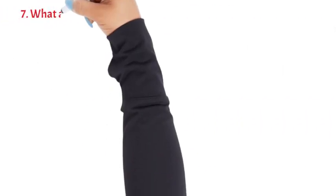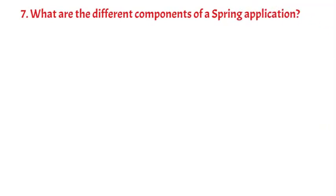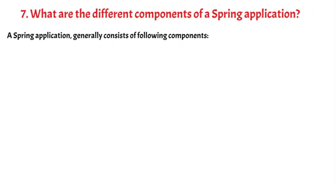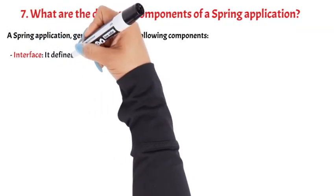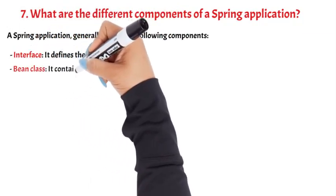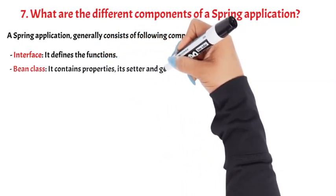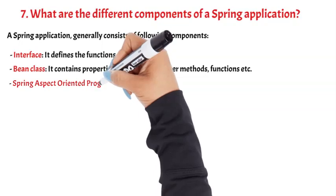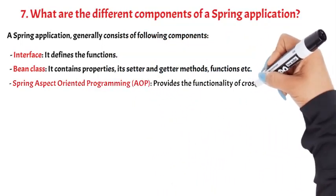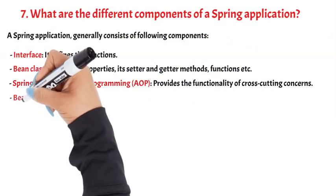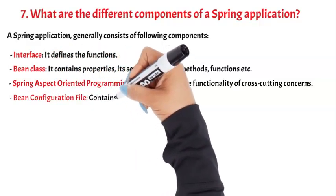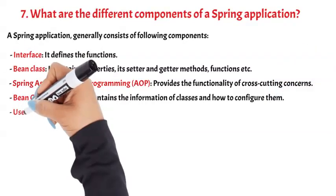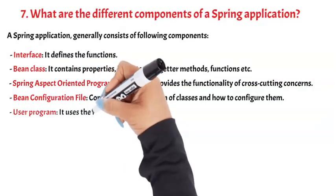Question 7: What are the different components of a Spring application? A Spring application generally consists of the following components: Interface — it defines the functions; Bean class — it contains properties, getter methods, functions, etc.; Spring Aspect-Oriented Programming (AOP) — provides the functionality of cross-cutting concerns; Bean configuration file — contains the information of classes and how to configure them; and User program — it uses the functions.